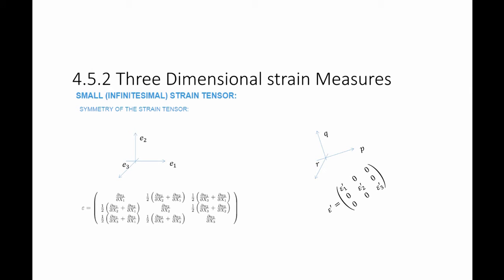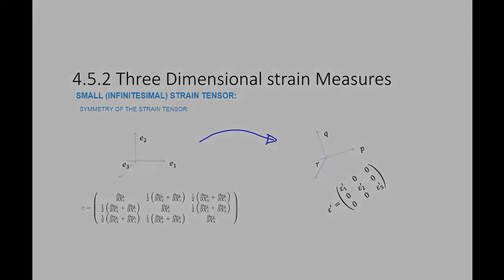By definition, the strain tensor is symmetric. One fundamental property of symmetric matrices is that there is a coordinate system in which the component form of the tensor is diagonal — the coordinate system made of the eigenvectors of that matrix. So if I calculate the eigenvectors p, q, and r of the strain tensor and transform to that coordinate system, the strain tensor will be diagonal with three non-zero diagonal components and zero off-diagonal components, meaning no shear strains — only stretch — in this new coordinate system.